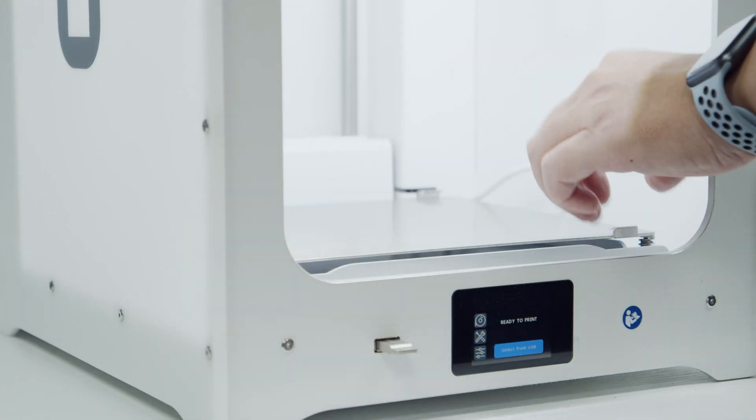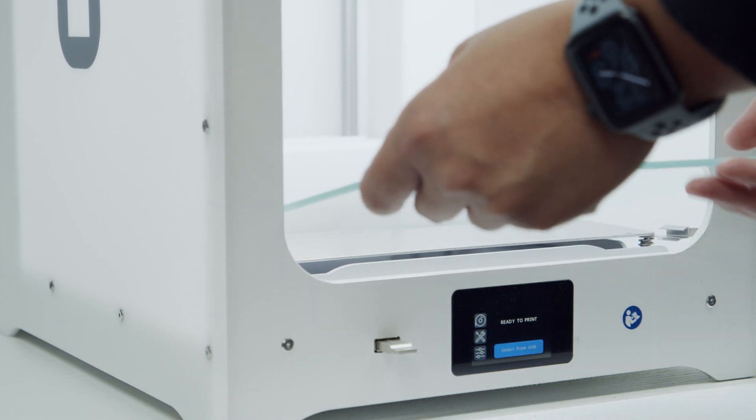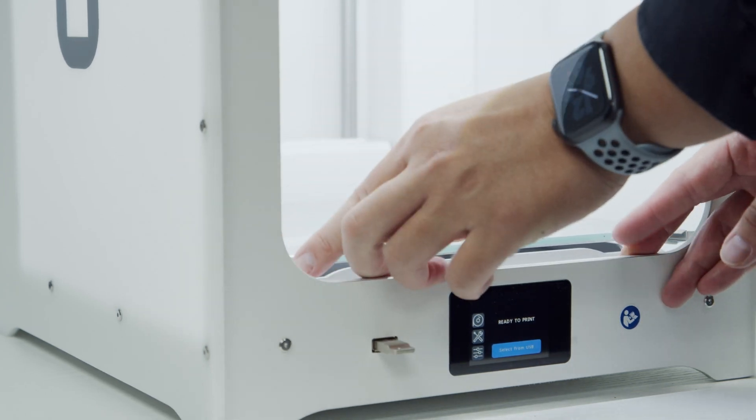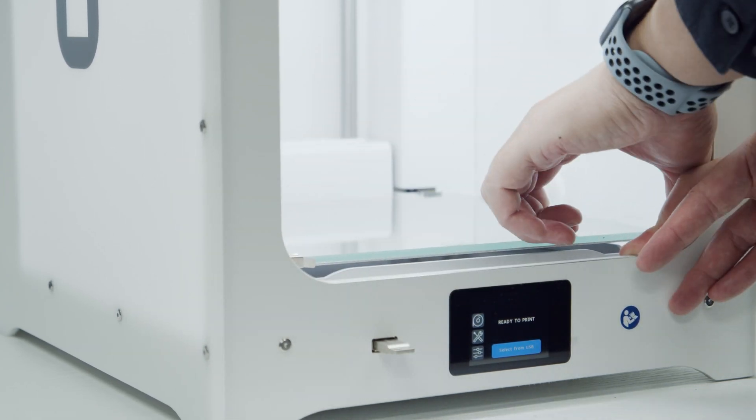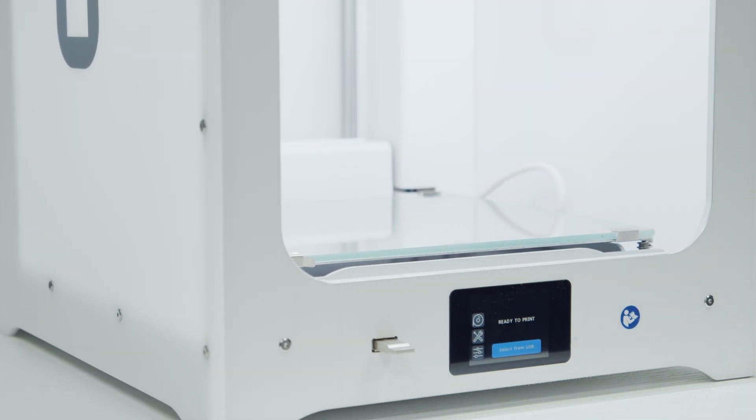Starting with the build plate, the print bed has four metal tabs holding it in place. Just rotate the front two so you can slide the build plate in. Push them back against the build plate to secure it. Ultimaker printers come calibrated and leveled so you won't need to level the bed before you start printing.